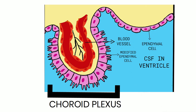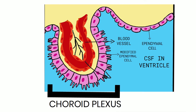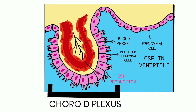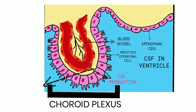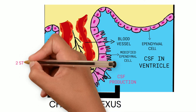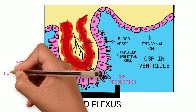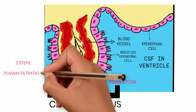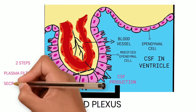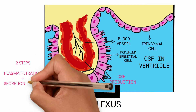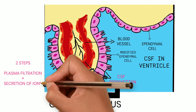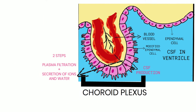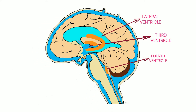The choroid plexus produces CSF in two steps. The first step is filtration of plasma across the choroidal capillary endothelium. The second step is secretion of ions and water across the choroid ependymal cells.